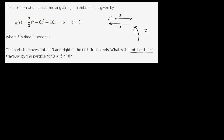Now that we've clarified that, let's think about when the particle is moving to the right and when it's moving to the left. It moves right when velocity is positive and left when velocity is negative. This boils down to finding when velocity is positive or negative, so let's graph the velocity function.